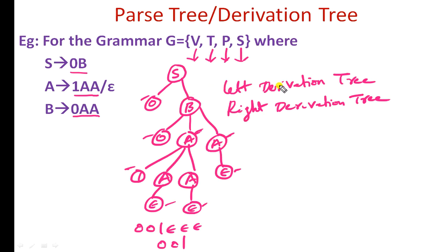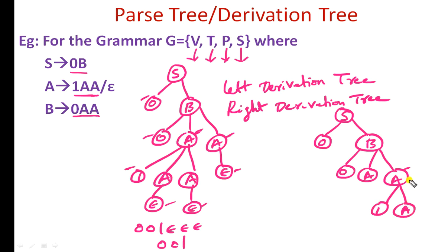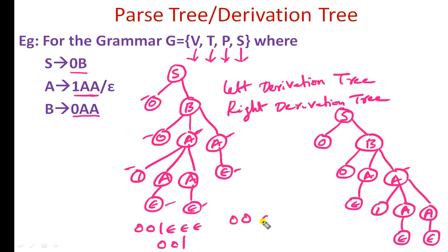If the same derivation is performed as a right derivation tree, we start with the start symbol giving 0B. Because B is the only variable, we derive 0AA. Instead of expanding the leftmost variable, we expand the rightmost variable A, substituting 1AA for it, giving 0, A, 1, A, A. Then replacing epsilon from the right side: epsilon for this A, epsilon for this A, and epsilon for the remaining A. The string generated is 0, 0, epsilon, 1, epsilon, epsilon — equivalent to 001.